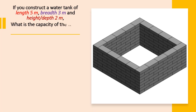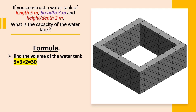If your water tank has dimensions of length 5 meters, breadth 3 meters, and height or depth 2 meters, what will be the capacity of the water tank? We shall use the same formula. First, find the volume of the water tank: 5 into 3 into 2 equals 30.